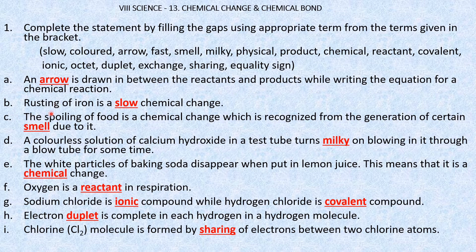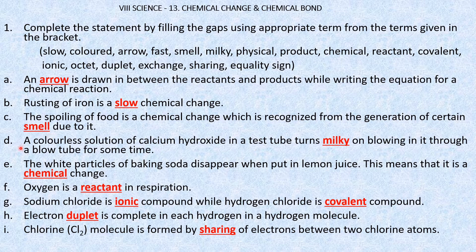Rusting of iron is a slow chemical change. The spoiling of food is a chemical change which is recognized from the generation of a certain smell due to it — the smell of the food changes.